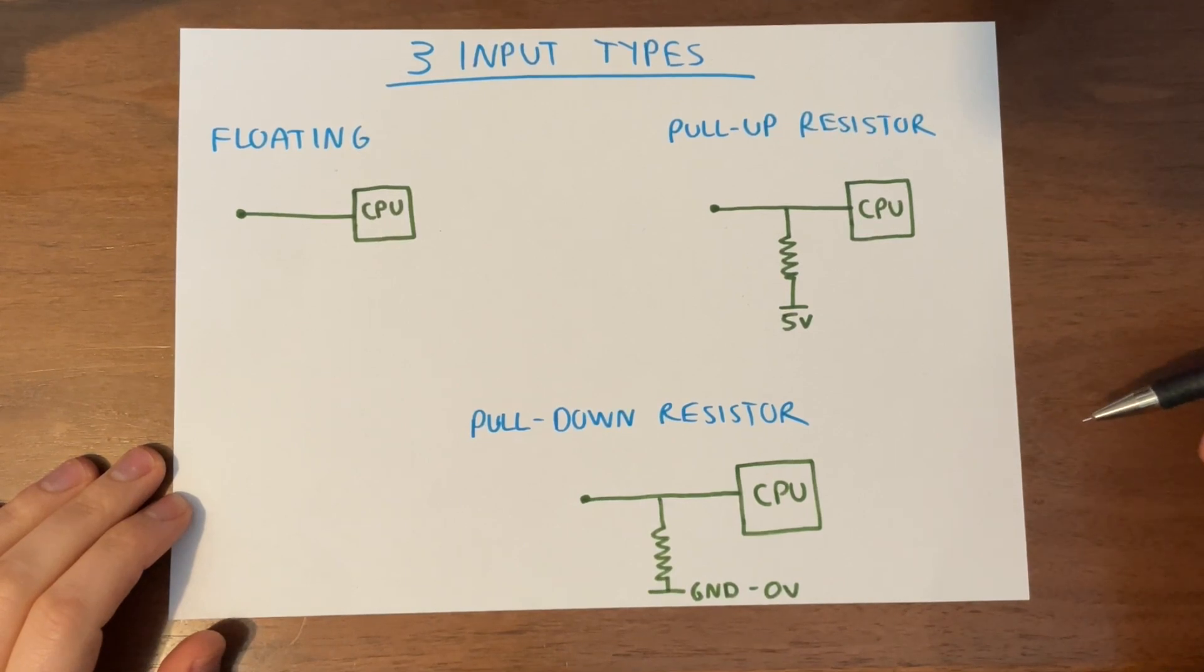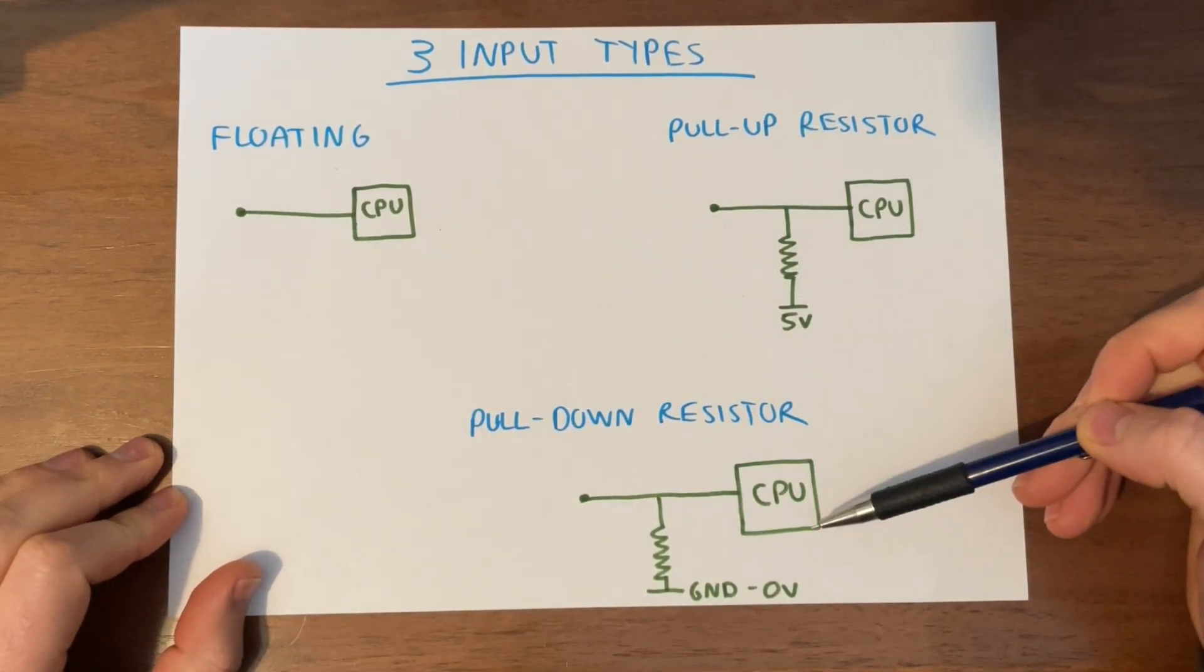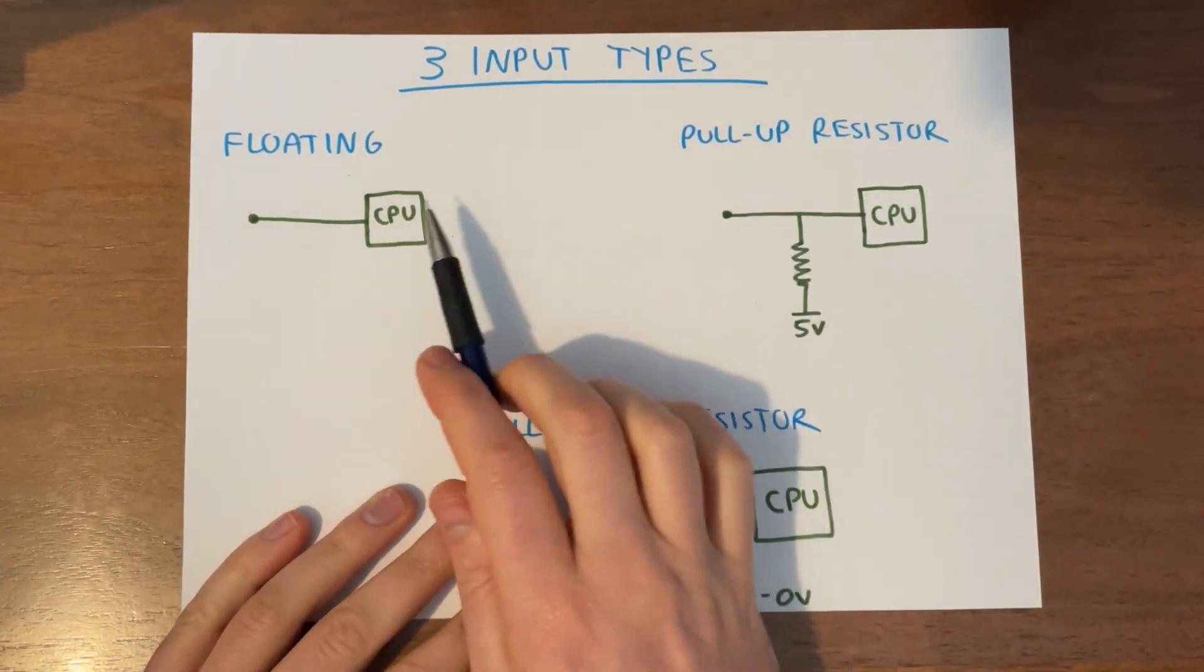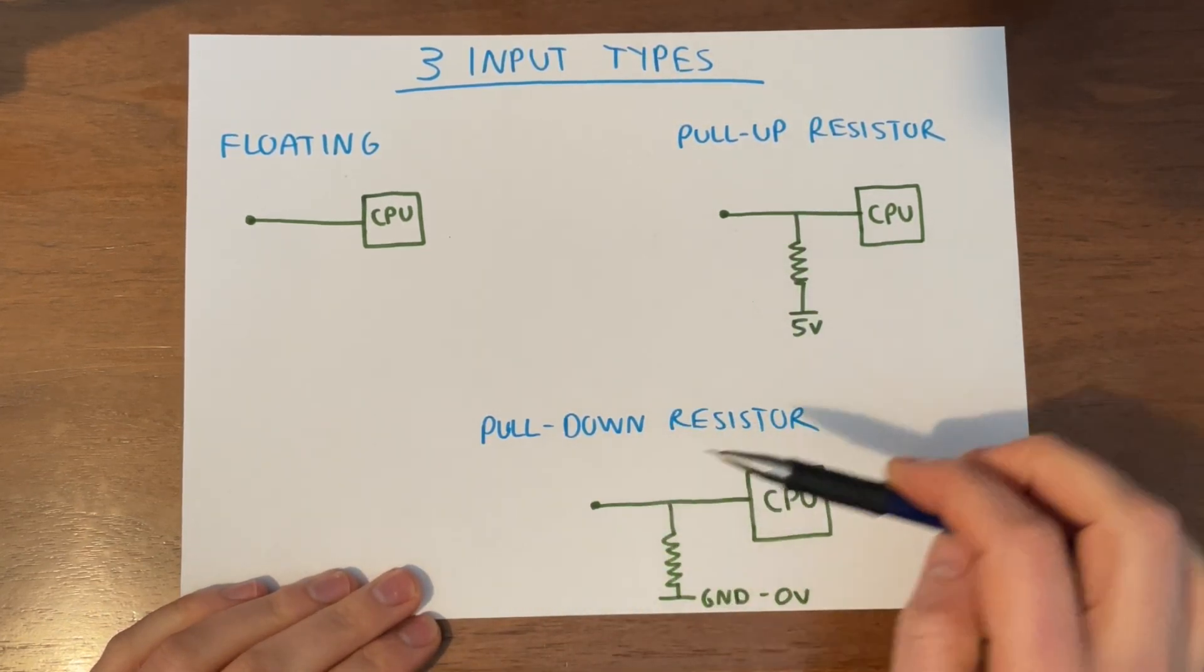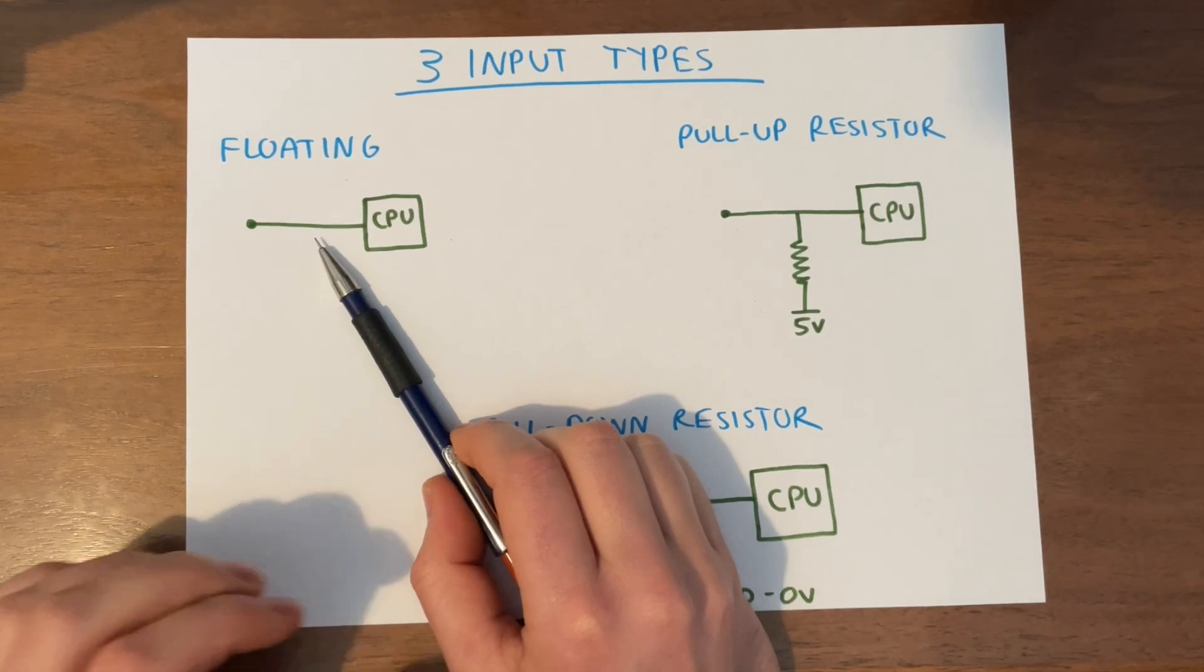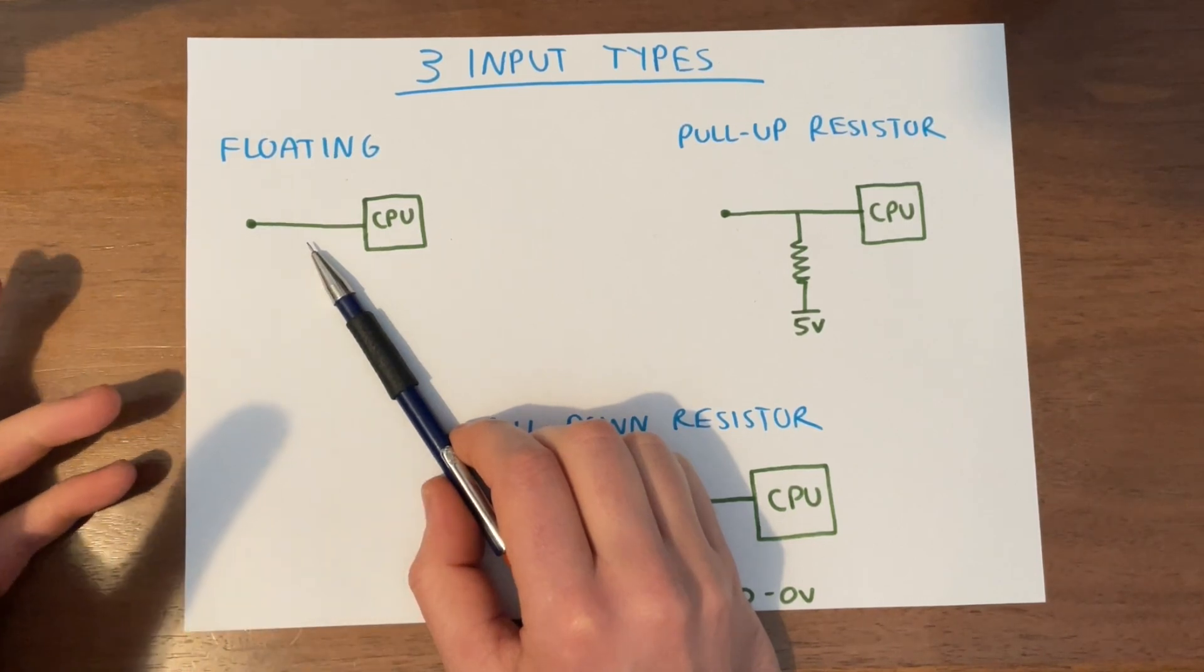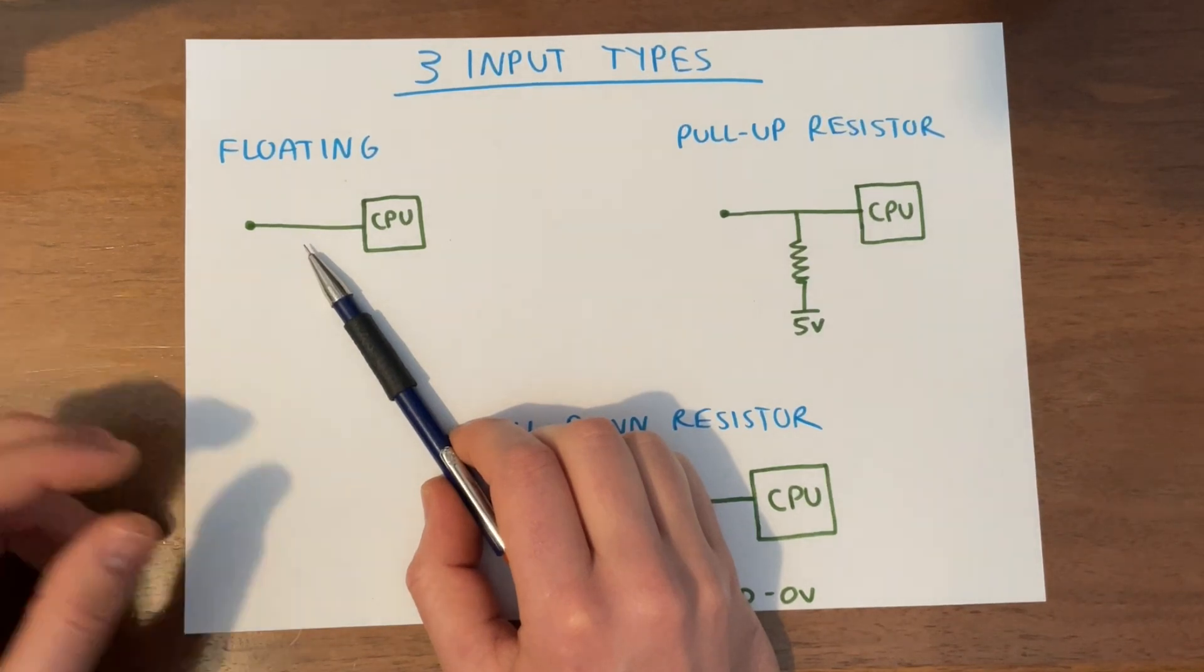Now, there's three different types of inputs that microcontrollers can have. They can have what's called a floating input. They can have a pull-up resistor input or a pull-down resistor input. Most commonly, microcontrollers will have these two. Some more advanced microcontrollers might also give you this option. And this is an option that you can configure in the program of the software. Floating is literally like a wire floating in space. You don't know what voltage a piece of wire floating in the air has. It could be 1,000 volts. It could be 0 volts. It could be minus 1,000 volts. You just don't know. It's floating.